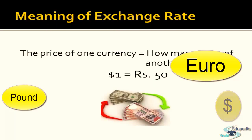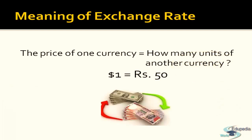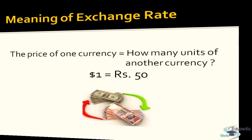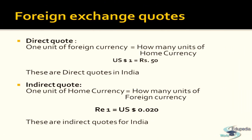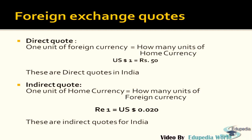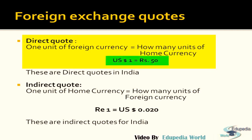How much amount you have to pay to buy one unit of another currency is called the exchange rate. For example, if today buying one dollar requires rupees 50, that is the exchange rate between dollar and rupees. This exchange rate can be quoted in two ways. If I say one dollar equals rupees 50, that tells me how much one unit of foreign currency equals in home currency — this is called a direct quote for India.